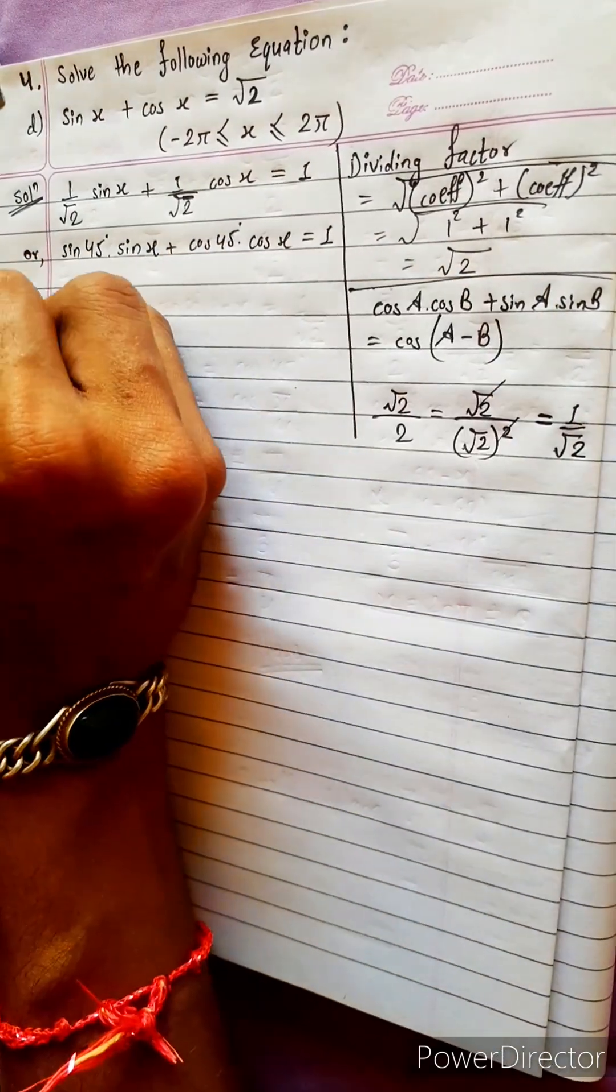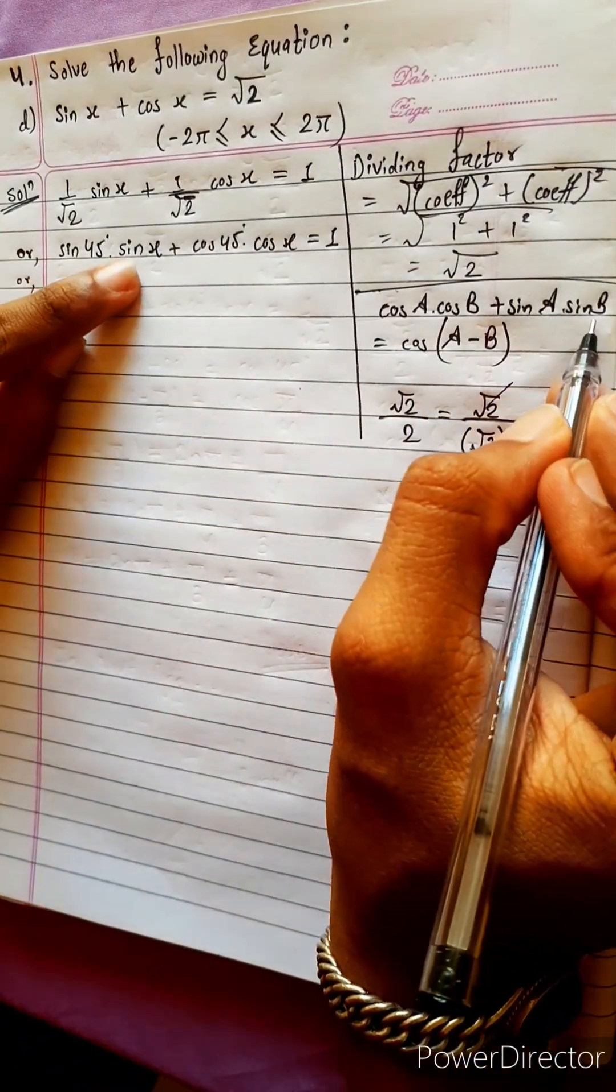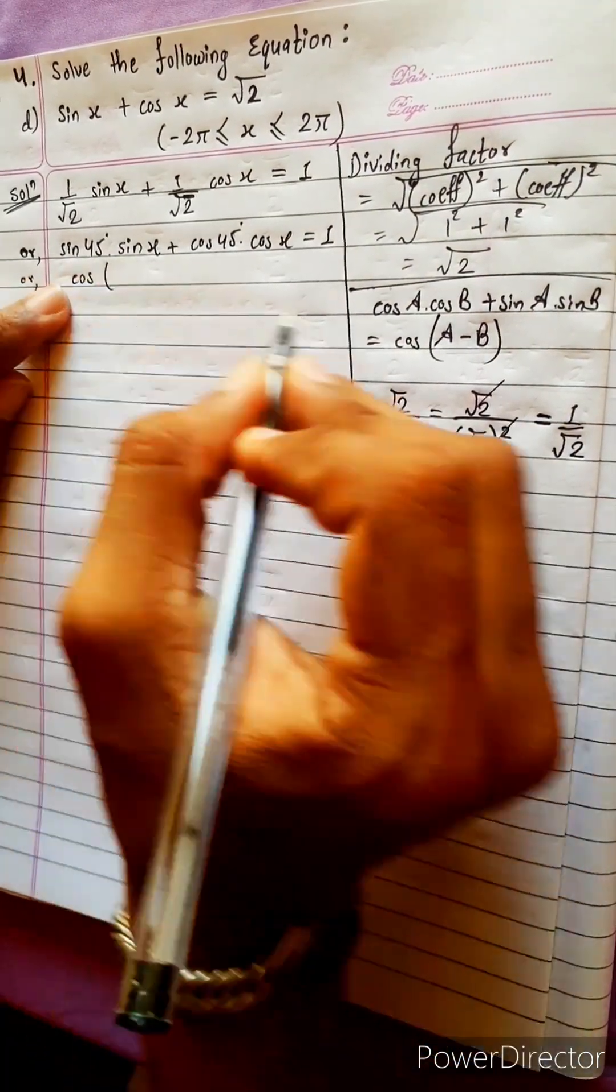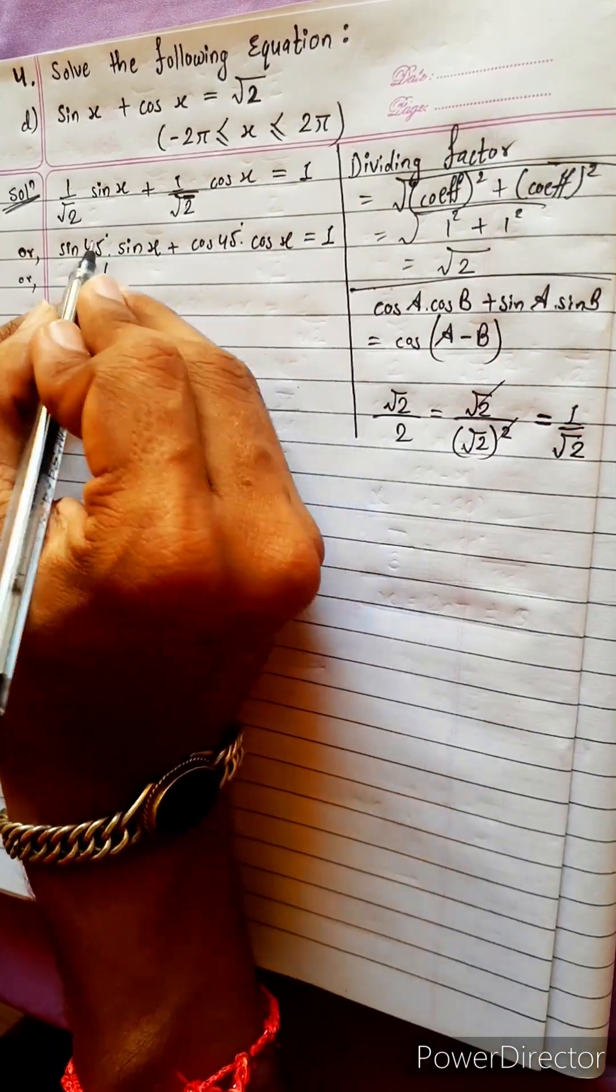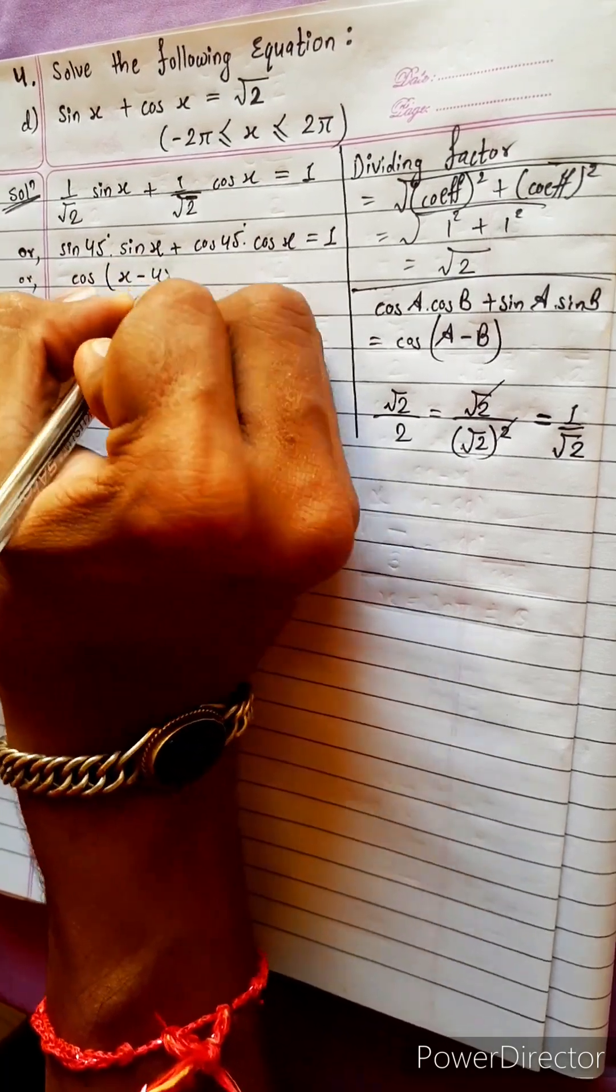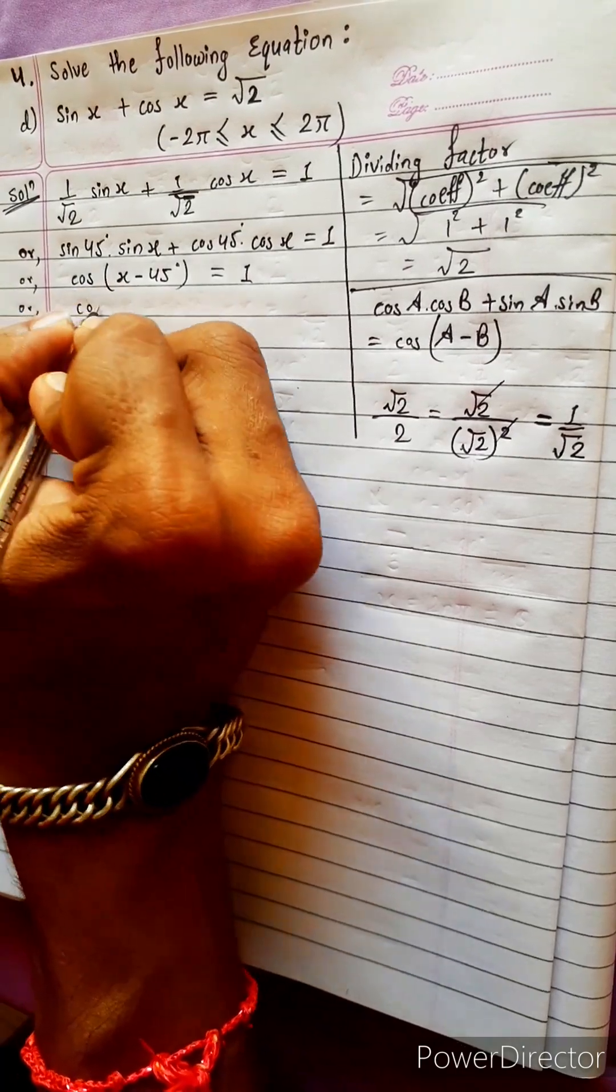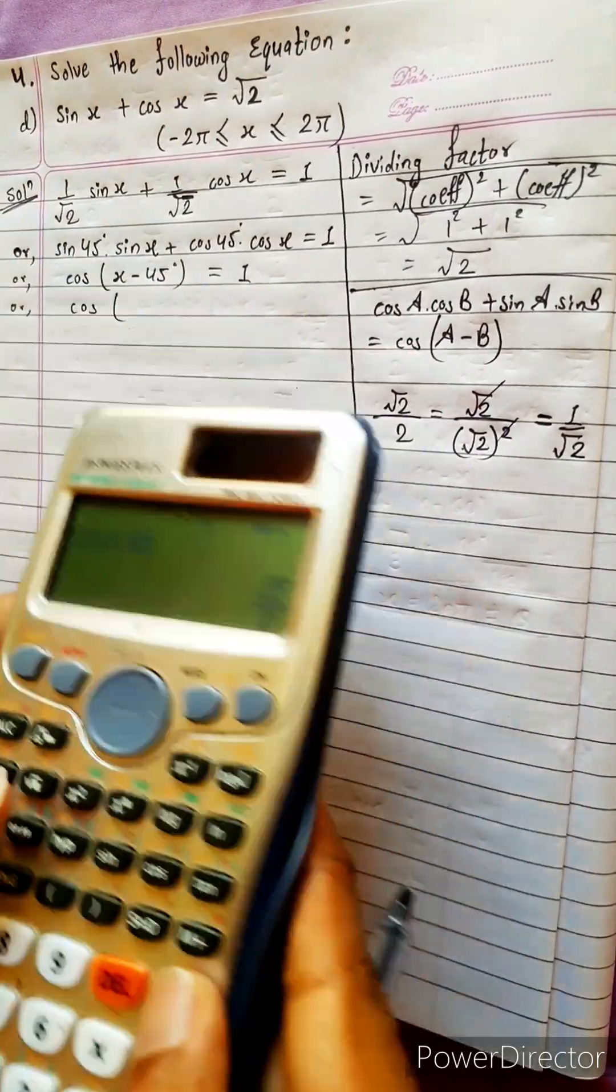1, leave it as it is. Now let's check formula. Sin a sin b plus cos a cos b means cos a minus b. Either you do 45 minus x or you do x minus 45, you will get same thing. At last, now 1 is how much? Cos 0 is 1.